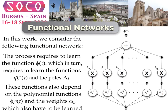In particular, in this work we consider this functional network, and in order to solve the problem we have to learn the function phi of tau, which in turn requires learning the different component functions and the poles in the expression of the functional error. This requires a learning process for the polynomial functions and the weights involved in the expression of the rational form.